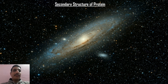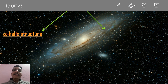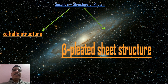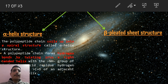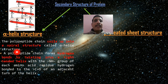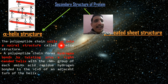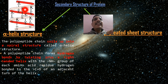Secondary structure of protein has two types. First: alpha helix structure. The polypeptide chain coils up into a spiral-like structure — like a spring — and that is called alpha helix structure. A polypeptide chain forms hydrogen bonds by twisting into a right-handed helix, with the NH group of each amino acid residue hydrogen bonded to the C=O of an adjacent turn of the helix.